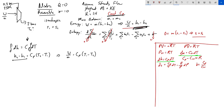We have T1 but still don't know cp, and we're missing T2. We know it's isentropic, so we use the entropy relation: ds equals (cp/T)dT minus (R/p)dp. Since s1 equals s2, this expression integrates to zero. This is the key insight — we can now set up the integral from T1 to T2 of (cp/T)dT equals the integral from p1 to p2 of (R/p)dp, and get a relationship between temperatures and pressures.